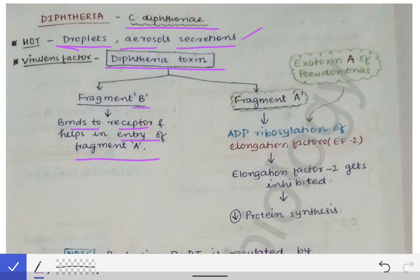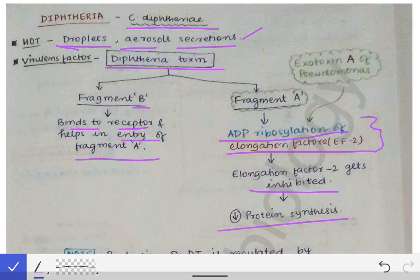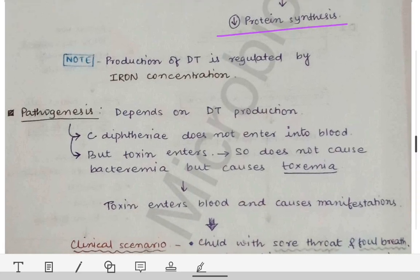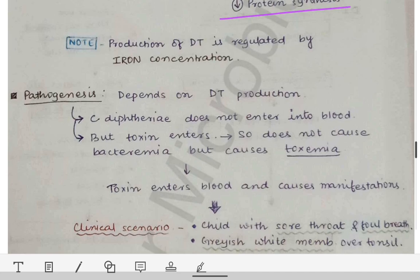Fragment A causes the ADP ribosylation of Elongation Factor 2 (EF-2). These are potential MCQ questions — what Fragment A does and to which factor. ADP ribosylation of EF-2 leads to inhibition of that elongation factor, causing a decrease in protein synthesis. When protein synthesis decreases, symptoms occur such as pseudomembrane formation, bleeding, and other clinical features.